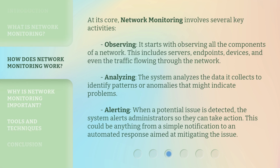At its core, network monitoring involves several key activities. Observing: it starts with observing all the components of a network — this includes servers, endpoints, devices, and even the traffic flowing through the network. Analyzing: the system analyzes the data it collects to identify patterns or anomalies that might indicate problems. Alerting: when a potential issue is detected, the system alerts administrators so they can take action — this could be anything from a simple notification to an automated response aimed at mitigating the issue.